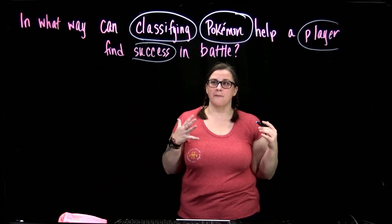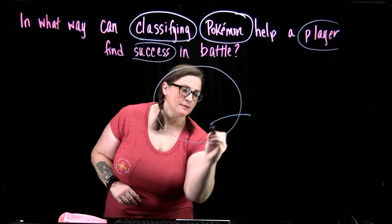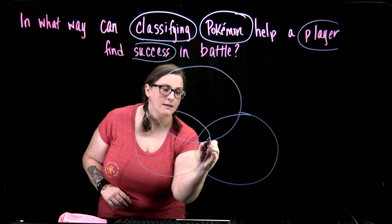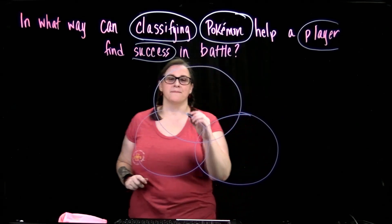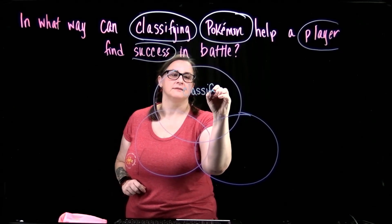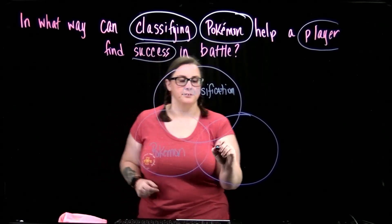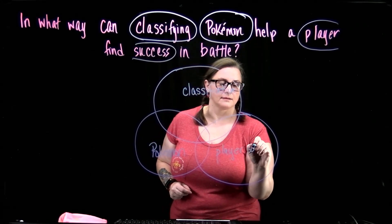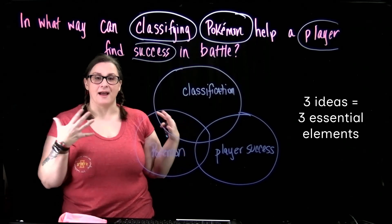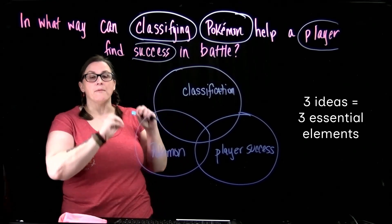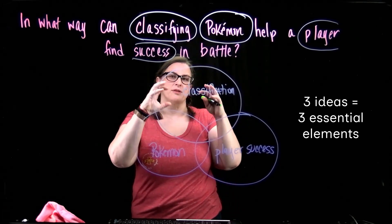We have three main topics, and if you'll notice, we have three circles. Let's draw a Venn diagram. We have a Venn diagram and we are just going to put our ideas from our research question into the diagram: classification, Pokemon, and player success. We have three ideas, and now our job as a researcher is to find ways to find data that will help us make our argument. We want synonyms for something in a circle, but also other things related to it — it doesn't have to be a direct synonym. This is not a thesaurus.com moment.